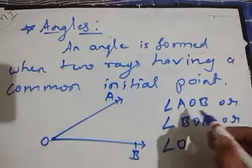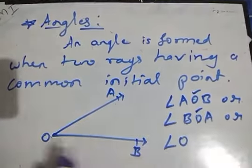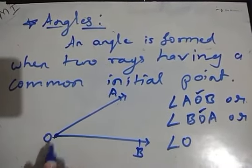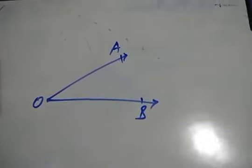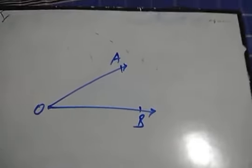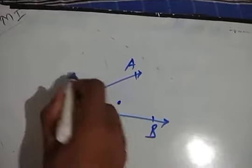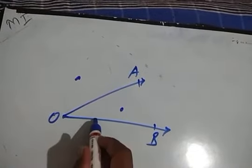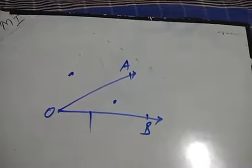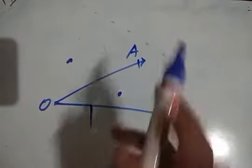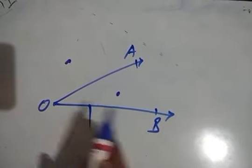Students, one thing to remember: the letter of the vertex must always be placed in the middle when naming an angle. Same as a closed figure and polygon, an angle also divides a plane into three parts: one is interior, another one is exterior, and one is the angle itself. Ray OA and ray OB are the arms, or sides, of these angles.